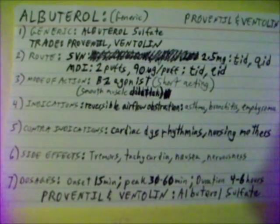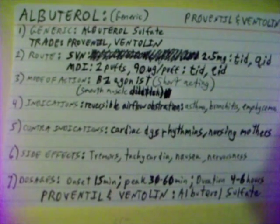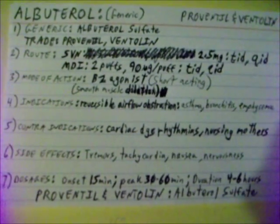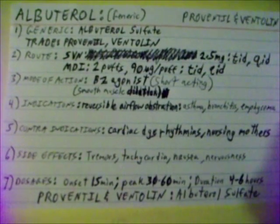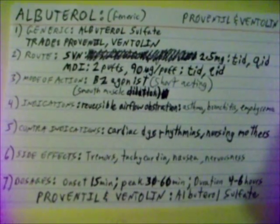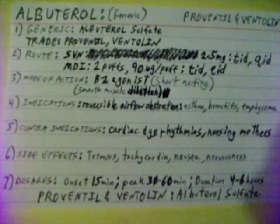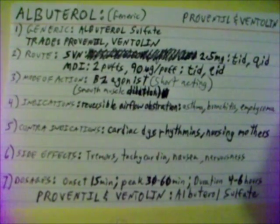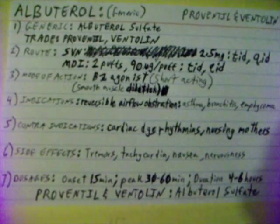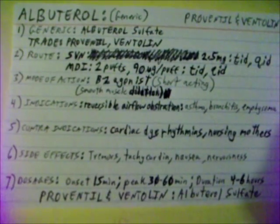Indications for albuterol are reversible airway obstruction including asthma, bronchitis, and emphysema. Contraindications: cardiac dysrhythmias and nursing mothers should not take. Side effects are tremors, tachycardia, nausea, and nervousness.